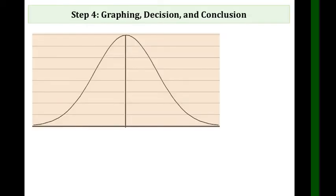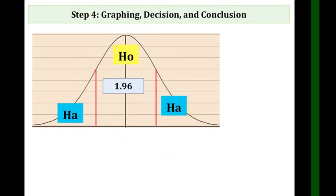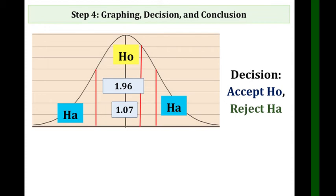Now, this is our critical region, 1.96. If the answer is inside, accept HO. If it's outside, accept HA. Our answer is 1.07, which is less than 1.96. Therefore, accept HO and reject HA.